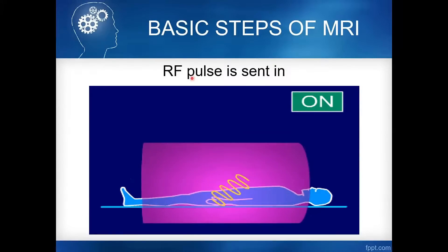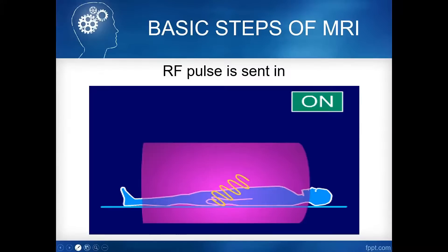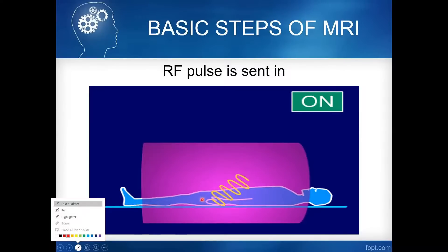The second step is the RF pulse being sent in. The RF coil supplies an RF pulse to the patient. The purpose of the RF pulse is to disturb and excite the hydrogen protons in the body, causing them to absorb the RF pulse. There is a specific RF pulse that must be supplied for the hydrogen proton to absorb it — its frequency must match the precession frequency from the first step.